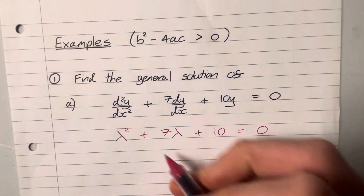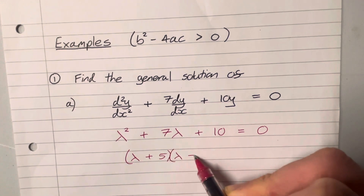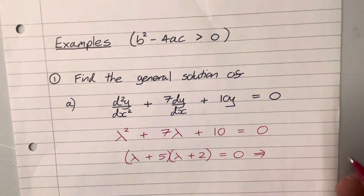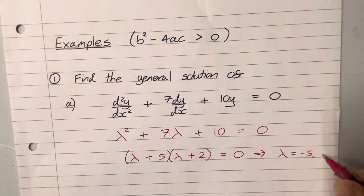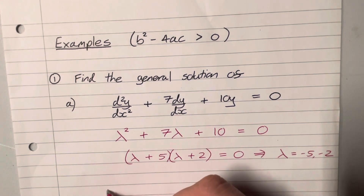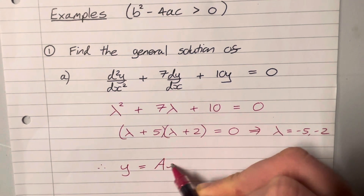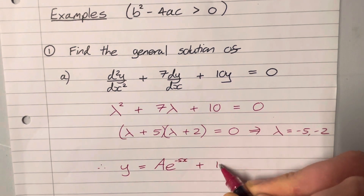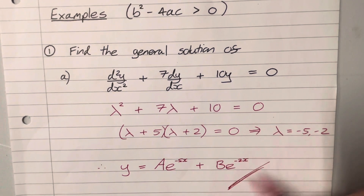If we solve this equation we get lambda plus 5 and lambda plus 2. You could of course use the quadratic formula or a calculator. We end up with lambda is either minus 5 or minus 2 — two distinct real solutions. So the general solution is y equals A e to the minus 5x plus B e to the minus 2x. That's the general solution.